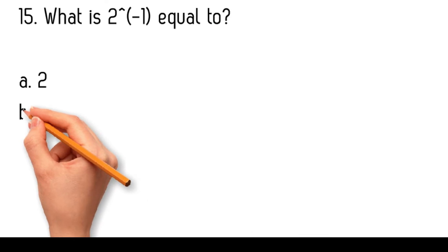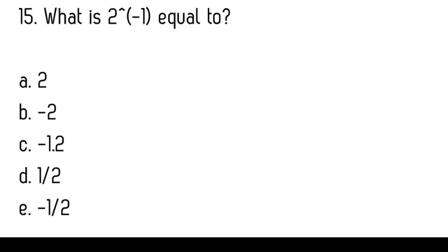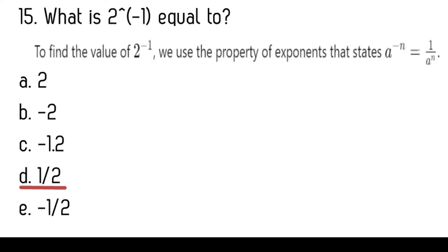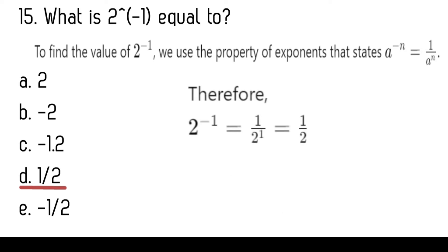What is two to the power of negative one equal to? Two, minus two, minus one-point-two, one-half, minus one-half. To find the value of two to the power of negative one, we use the property that a to the power of negative n equals one over a to the power of n. Therefore, two to the power of negative one equals one over two to the power of one, which equals one-half.